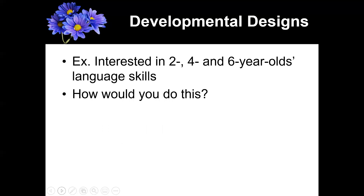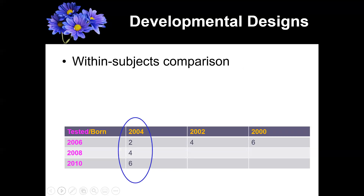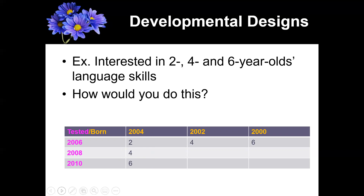For example, if you're interested in language development in two-, four-, and six-year-olds' language skills, there are a couple of ways you can do this. One way is known as a longitudinal design, and one way is known as a cross-sectional design.